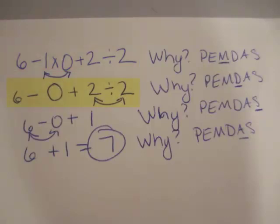So now we have 6 minus 0, because we multiplied up here, plus 2 divided by 2. Now we divide 2 by 2, which is 1. Why do we do that? Because division comes before addition and subtraction in PEMDAS.